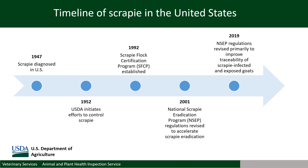In 1992, the Scrapie regulations were revised through a collaborative effort with states, tribal nations, and industry. One of the changes introduced at that time was the establishment of the Voluntary Scrapie Flock Certification Program, or SFCP. The goal of the SFCP is to identify flocks that have been free of clinical evidence of scrapie over specified time periods, with the ultimate objective of a participating flock to become certified as having negligible risk for scrapie. In 2001, in response to requests from industry, the USDA made a commitment to eradicate scrapie from the United States by putting into regulation the National Scrapie Eradication Program, or the NSCP.